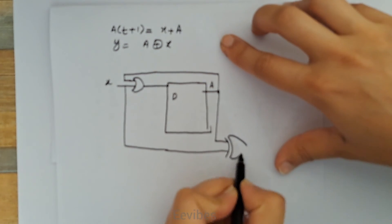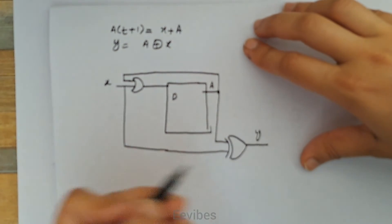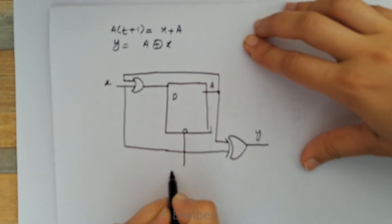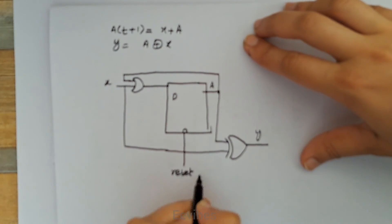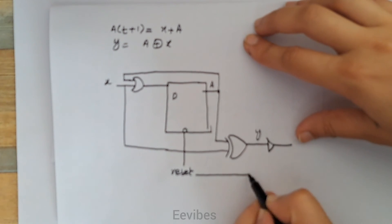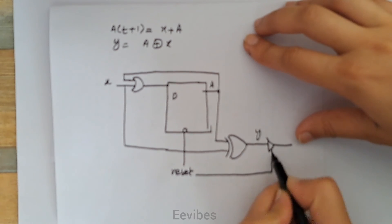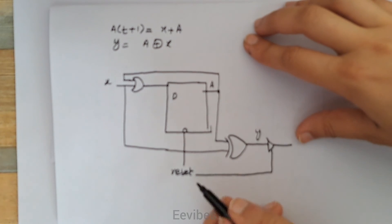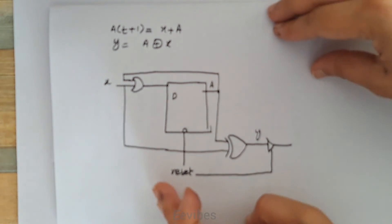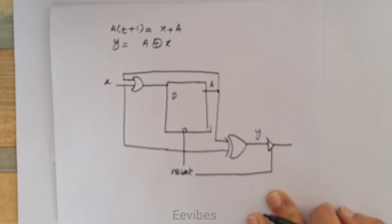There was another requirement that a reset button should be present in this circuitry. For that, we can add a buffer in the circuit and the reset input can be fed into that buffer, so we can reset the system at any time. If you have questions, drop them in the comment section, and don't forget to like, subscribe, and share. Thank you for watching.